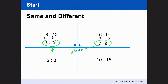Now let's see if D follows that same pattern. I know that 5 can go into both 10 and 15. 10 divided by 5 is 2, and 15 divided by 5 is 3. They are all the same because they are equivalent ratios.